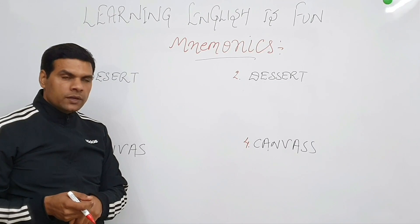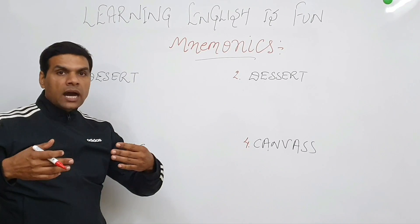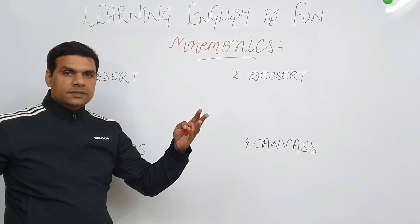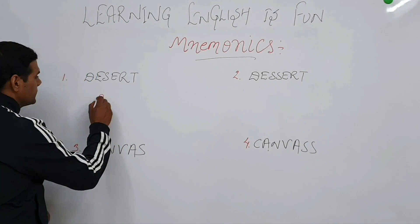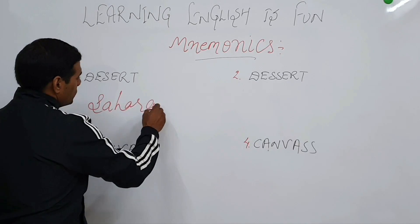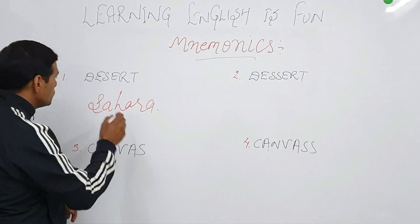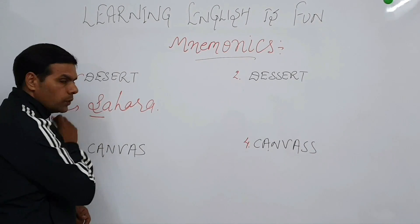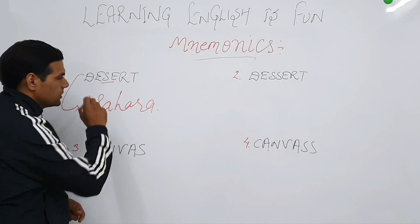What could be one example of this word? Well, Thar desert in India, but which one is the largest desert in the world? Yeah, this is Sahara which is in Africa. So once you associate this word with Sahara, you will know that Sahara has got one 's' and so does this word desert.